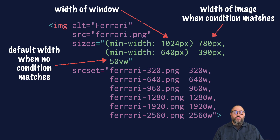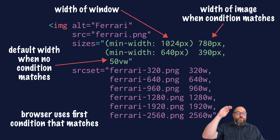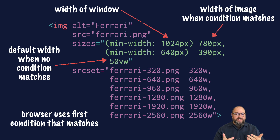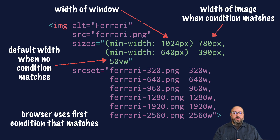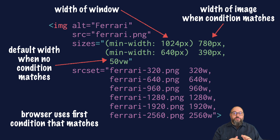You could even use calc for more complex situations, such as accounting for padding around the image. The browser will work its way down this list and apply the first item that matches the viewport. Using this sizes attribute, if the user is on a large desktop display, the browser matches the first item and knows the image will be 780 pixels wide. An iPad in standard vertical orientation is 768 pixels wide, so the browser would skip the first item but match the second, which says the image will be 390 pixels wide. A user on a typical mobile device would land on the default, which says the image will be 50% of the viewport width.